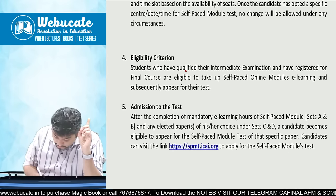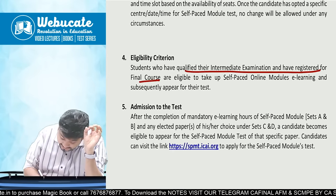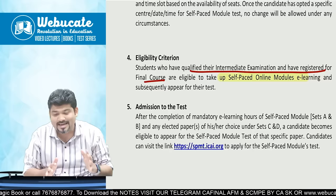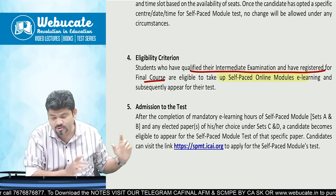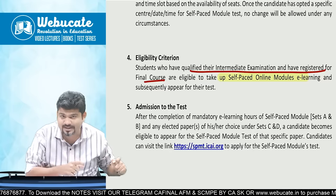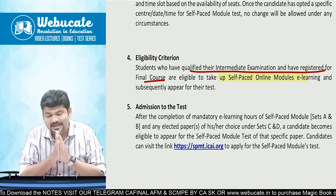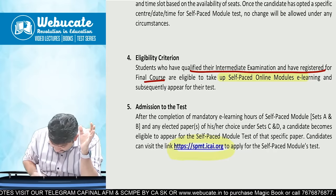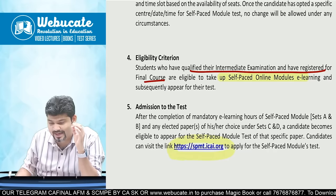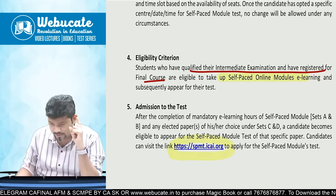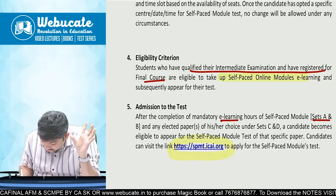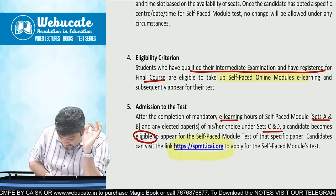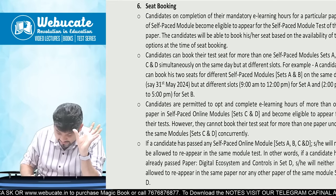Students who have qualified their Intermediate and registered for the Final course are eligible to take the self-paced online modules. For admission to the test, the link is spmt.icai.org. After completion of mandatory learning hours for Set A/B or Set C/D as applicable, the candidate becomes eligible for the test.